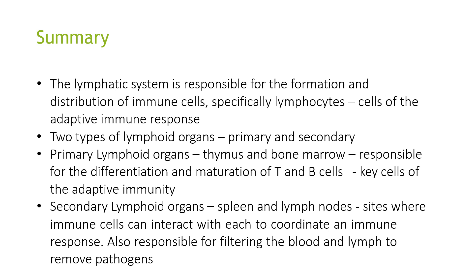In summary, the lymphatic system is responsible for the formation and distribution of immune cells, specifically lymphocytes. There are two types of lymphoid organs: primary and secondary. The primary lymphoid organs are the thymus and bone marrow, which are responsible for the differentiation and maturation of T and B cells — the key cells of immunity. The secondary lymphoid organs, which include the spleen and lymph nodes, are sites where immune cells interact to coordinate an immune response and are also responsible for filtering the blood and lymph to remove pathogens.